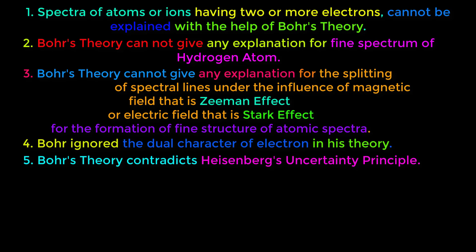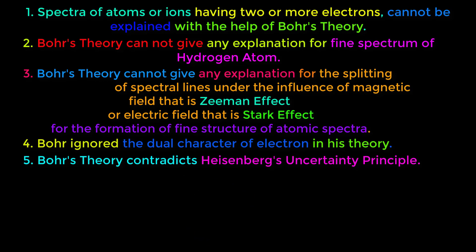The fifth limitation of Bohr's theory is that it contradicts Heisenberg's uncertainty principle. According to Bohr's atomic model, an electron moves around the nucleus along a fixed circular path with a definite velocity. But Heisenberg said it is impossible to simultaneously measure both the position and velocity or momentum of an electron.